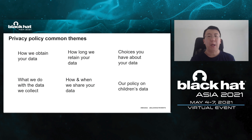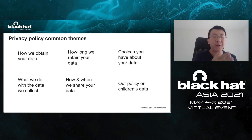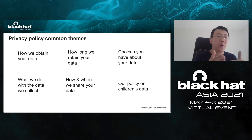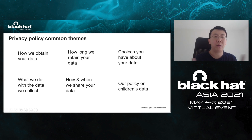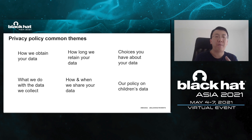Looking at major applications on Google Play, their privacy policies typically cover six themes: how the application collects data (via API, camera, microphone, etc.); the purpose of collection; how long data is kept; with whom and when data is shared; what control data owners have; and, if children's data is involved, a specific policy for that.